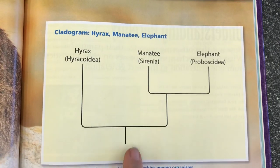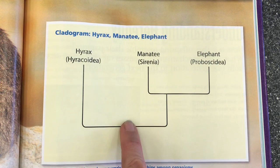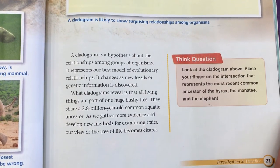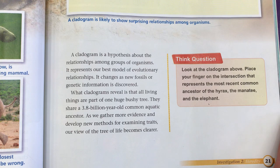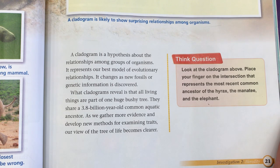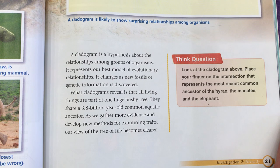Here's that common ancestor that's about the size of a pig. A cladogram is a hypothesis about the relationship among groups of organisms — it represents our best model of evolutionary relationships. It changes as new fossils or genetic information is discovered. What cladograms reveal is that all living things are part of one huge bushy tree — they all share a 3.8-billion-year-old common aquatic ancestor. As we gather more evidence and develop new methods for examining traits, our view of the tree of life becomes clearer.